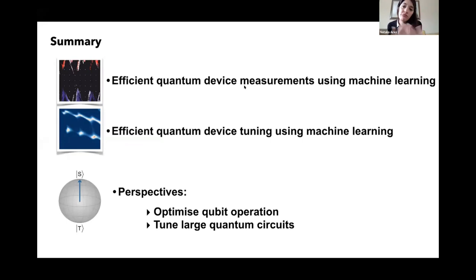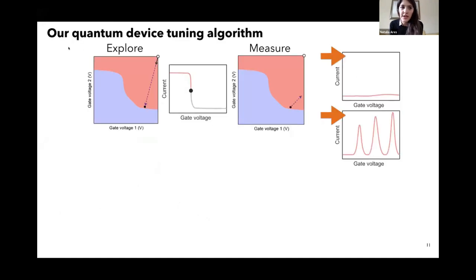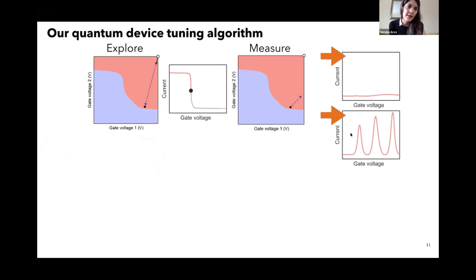For the measurement algorithm, there are different noise patterns, but these are in some sense learned during training if they are representative types of noise. For the tuning algorithm, it's more important because there we don't have a training set — we extract information from the current traces. If there is noise such that you think there is a peak when there is no peak, then the algorithm would be confused. So you have to be smarter at detecting the features if the device is very noisy or very switchy. The devices we tested the algorithm on — thanks to our collaborators at Vasil — are super good devices and not very noisy. But it would be nice to check how robust they are on very switchy devices as well.